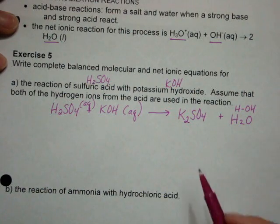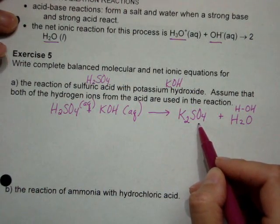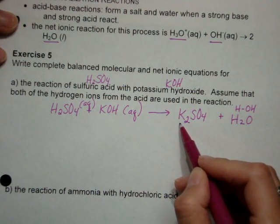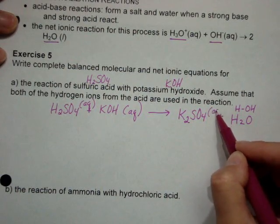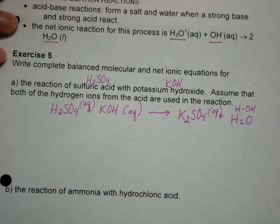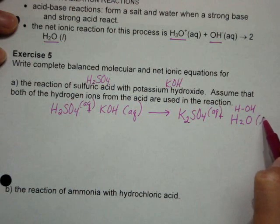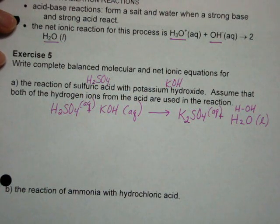Now we need to look at solubilities here. Sulfates are generally fairly soluble, especially considering this is paired with a group one ion, so I'm going to call that aqueous. And then water can be a solid, a liquid, or a gas. So in this case, we're probably talking about the liquid form. Now to create a net ionic equation, we have to use a total ionic first.